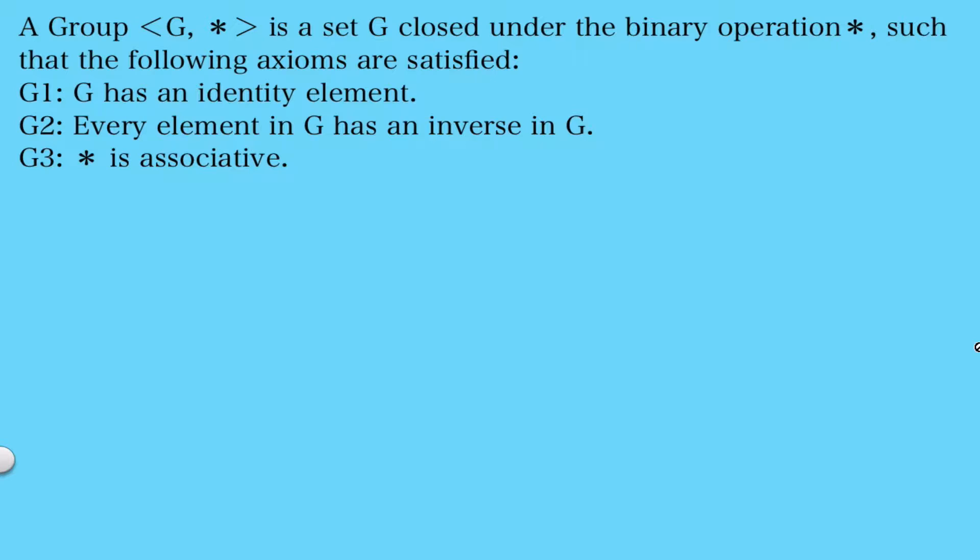G must have an identity element, every element in G must have an inverse in G, and the binary operation star must be associative.